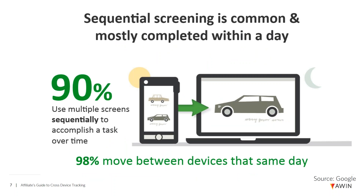Sequential screening is the most common and is usually completed within a day. 90% of people use multiple screens sequentially to accomplish a task, including shopping. People will often switch devices for their final purchase because it's easier or more convenient — sometimes the screen is too tiny to enter a credit card number, or sometimes the boss walks up. People make many switches between devices during the day, and 98% will move between multiple devices in that same day to accomplish a task.